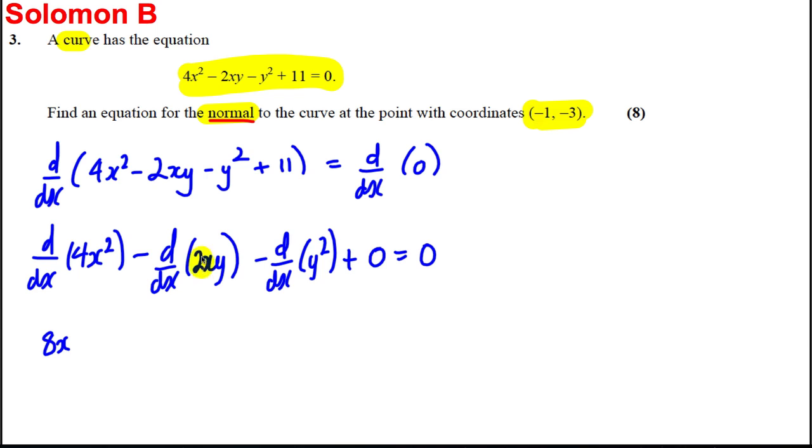We're going to treat this as a product with 2x as u and y as v. I'm subtracting the answer to this whole expression. So put a bracket around this. I'm subtracting u v', so 2x d/dx of y, plus v u', so plus y d/dx of 2x.